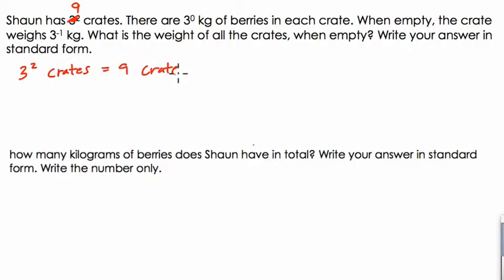And then I noticed it says there are 3 to the 0 kilograms of berries in each crate. But 3 to the 0 is 1. So now the problem is reading a little bit easier, but we're going to write it down. We have 3 to the 0 kilograms of berries, and that equals, of course, 1 kilogram of berries.